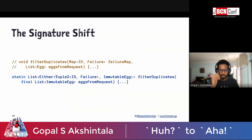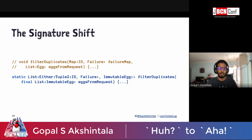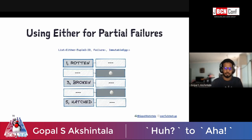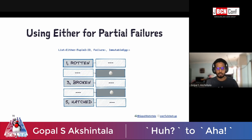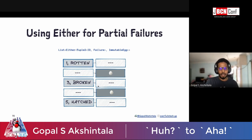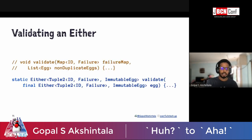We refactored it. The signature shift: filterDuplicates no longer takes a failure map; instead, it takes a list of objects and returns a list of Eithers. A list of Eithers has two containers — left and right — and all bad ones go on the left, so the caller knows to skip them from processing. The good news is that happens automatically, because Either is a monad.